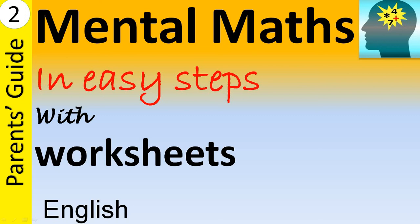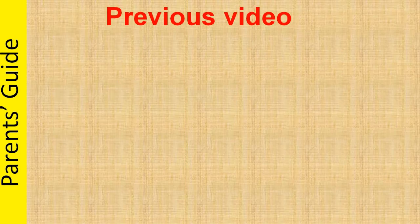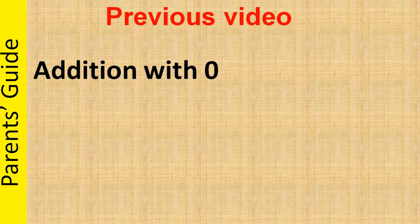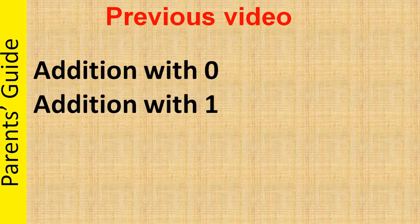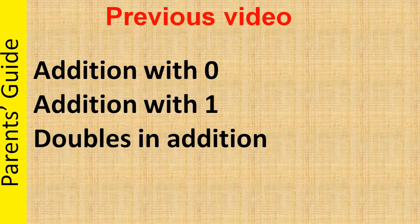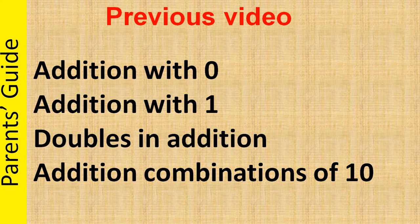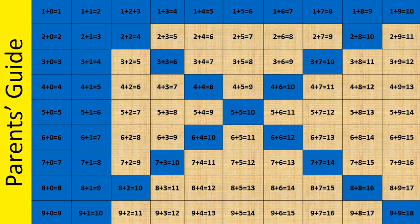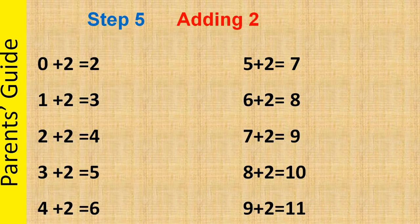Hello and welcome to parent's guide. In the previous video, we saw addition with 0, addition with 1, doubles in addition, and addition combinations of 10. In this addition table, we covered the portions shaded in blue in the last video. In this video, we'll see how to teach the portions shaded in yellow. Since we covered steps 1 to 4 in the last video, we'll start from step 5.